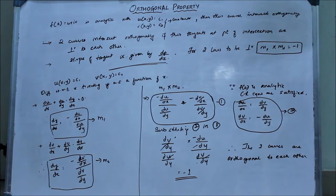So we say that two curves are orthogonal to each other if their tangents are perpendicular to each other. The second point is slope of a tangent is given by dy/dx.